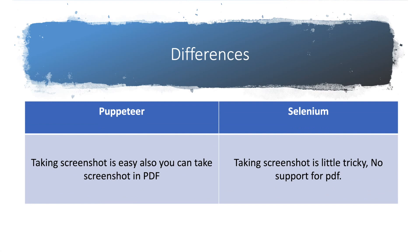With Puppeteer, taking screenshots is very easy. You just do page.screenshot and it takes the screenshot and stores it in whatever path you give. You can also have screenshots and PDF. You can crop screenshots at runtime. With Selenium, taking screenshots is a little tricky. You have one method and you can use that directly, but it doesn't support PDF.